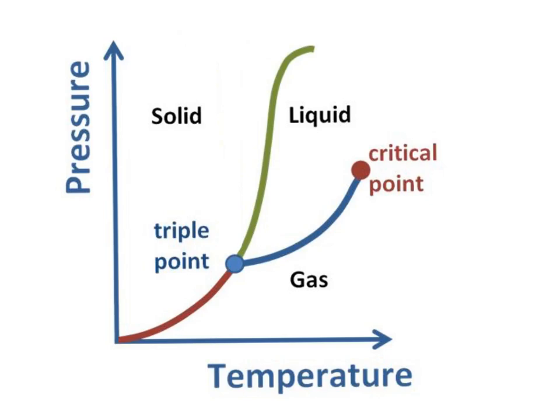We could tell the state of matter for a substance at a given temperature and pressure. So for example, this represents water, this phase diagram. And so on this graph, right about here would be standard atmospheric pressure, which would be 1 atmosphere or 101.3 kilopascals. And then right about here would be 0 degrees Celsius, and so that's the freezing point of water.